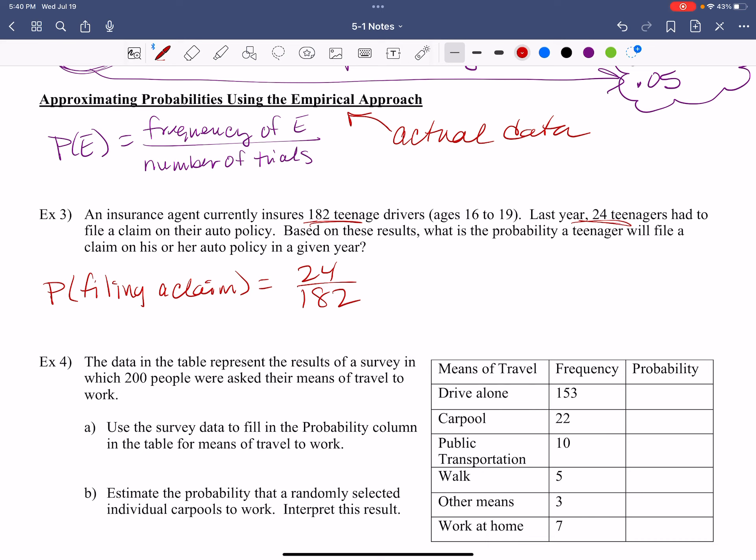Do you see that? Let's take it to three decimal places just for accuracy as we go through here. So 24 divided by 182 in your calculator will give you 0.132. And a lot of times it says now interpret what that means. So what that means is about 13 out of 100 teenagers will file a claim.